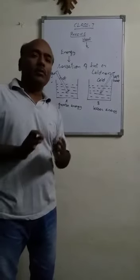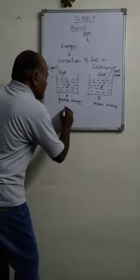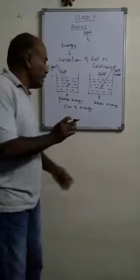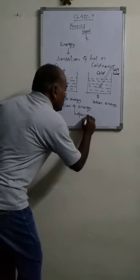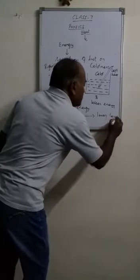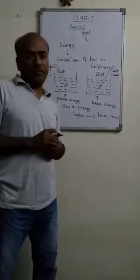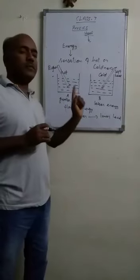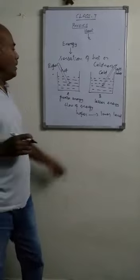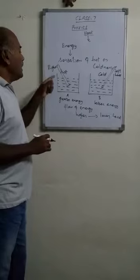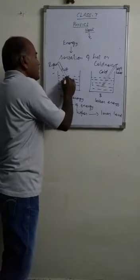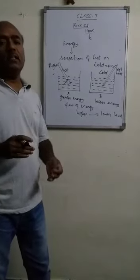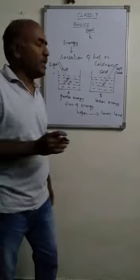That special property is that energy can flow from one level to another level — that is the flow of energy. Energy flows from a higher level to a lower level. So this is its basic nature. Here also, the hotness felt by the right hand and coldness felt by the left hand is due to the flow of energy from one level to another. The right hand feels hotness because the energy is flowing from the water to our hand. And the left hand feels cold because the energy from our hand flows to the water.